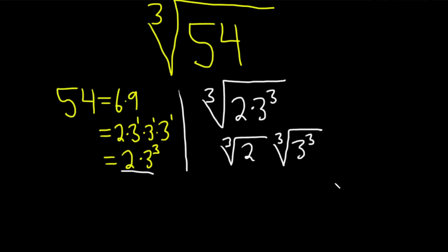And whenever the index matches the exponent, it basically cancels. So we get the cube root of 2 times 3.